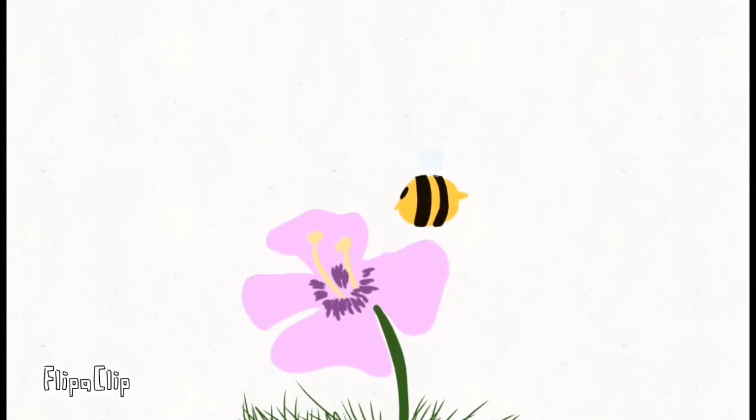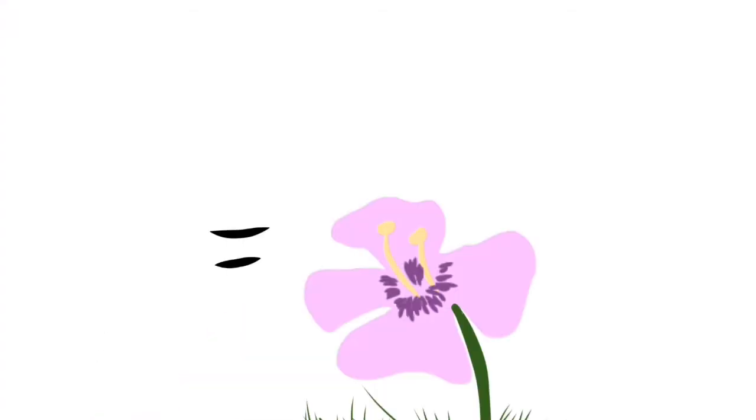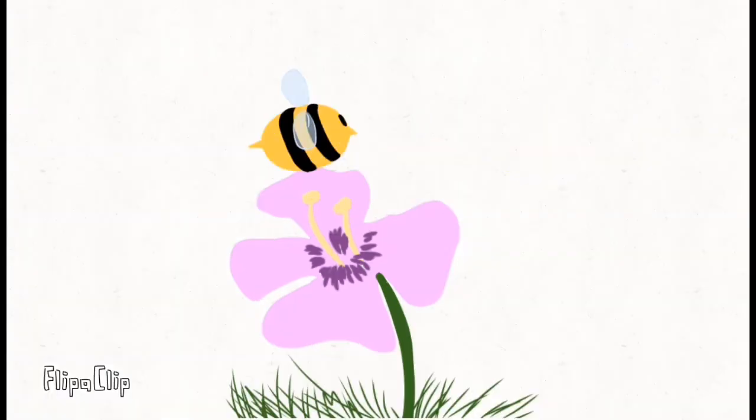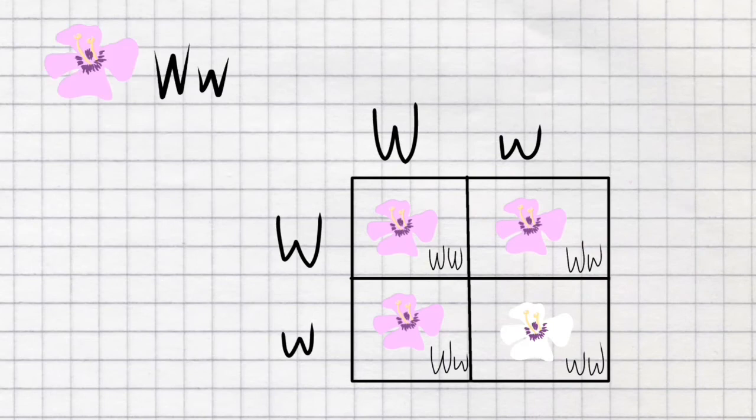And lastly, law of segregation, where each gamete receives one gene copy and is selected randomly. We can use the Punnett Square with this law to determine what the possible offsprings could be. After the F1 generation self-pollinated, this was the result.